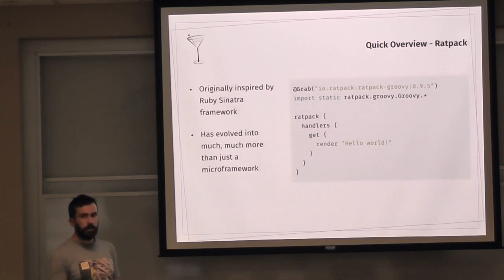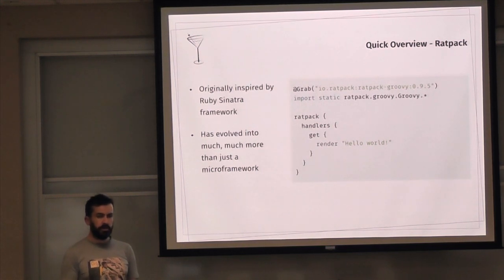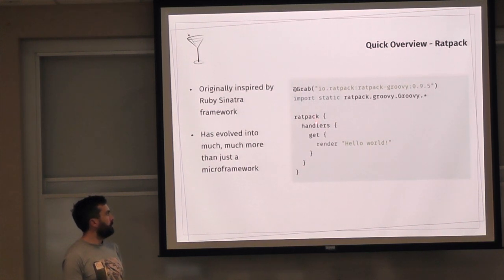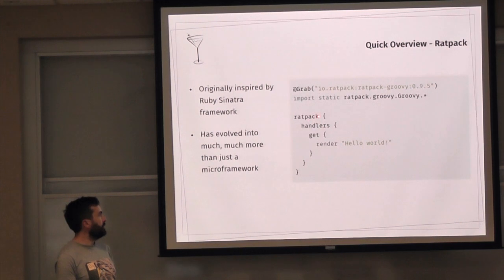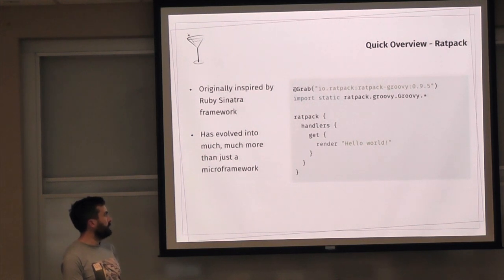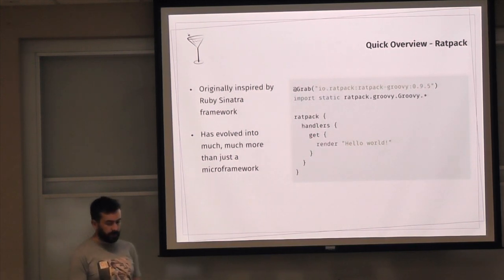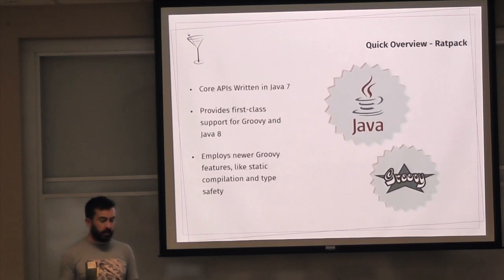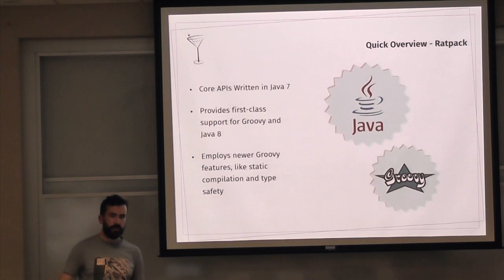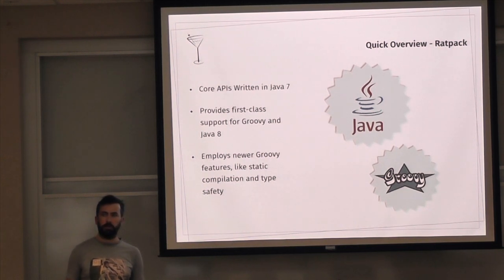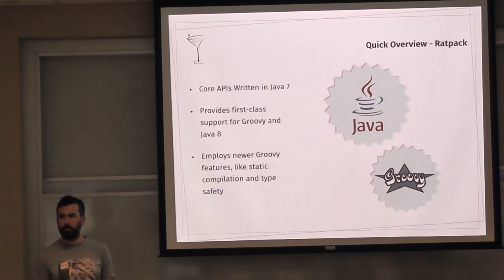Even though RatPack has moved away from the Sinatra foundation, it's still got the Groovy DSL if you want it. This is a RatPack application executed with a tiny bit of Groovy code. We're statically importing the RatPack method — that's the gateway into the RatPack handler itself. We define a single handler on the default context, and it just renders output to the screen. The core API is written in Java, it's 100% static and strongly typed, even though it has first-class support for Groovy closures.